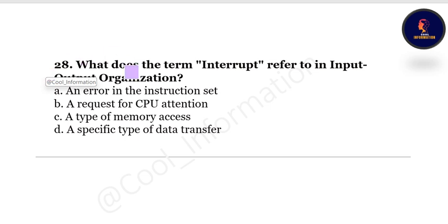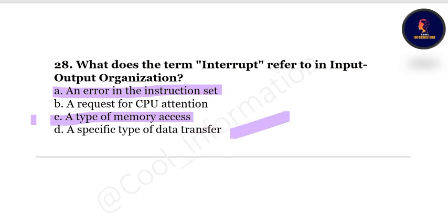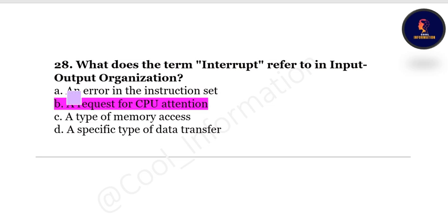Question 28: What does the term 'interrupt' refer to in input-output organization? Option A: an error in the instruction set, Option B: a request for CPU attention, Option C: a type of memory access, Option D: a specific type of data transfer. The correct option is a request for CPU attention.